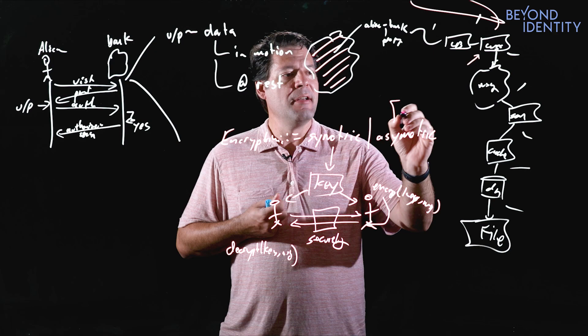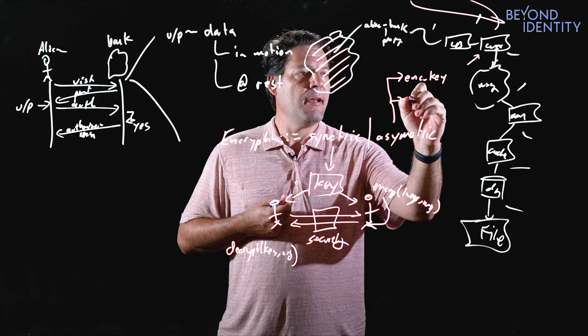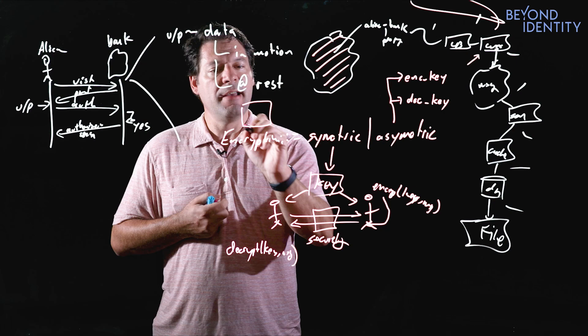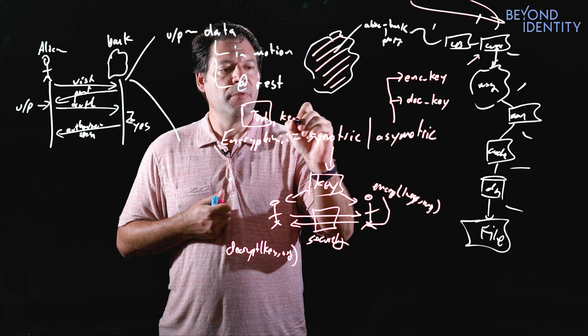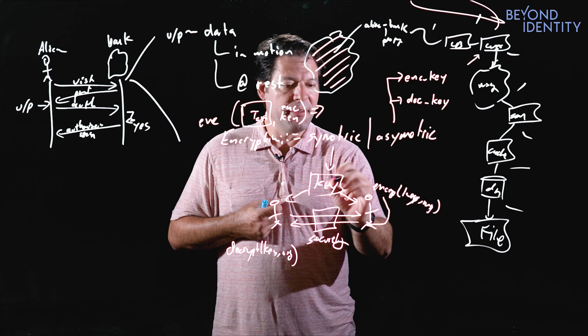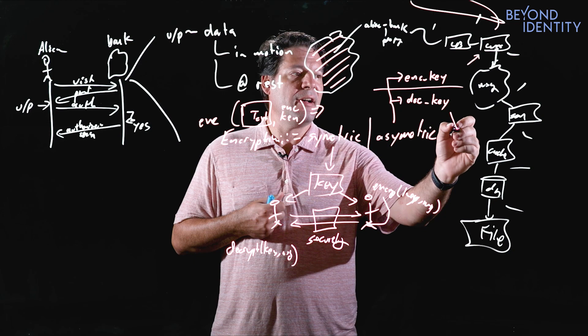In asymmetric encryption, you actually have two keys: an encryption key and a decryption key. As the name implies, they're asymmetric and go in one direction. If I have a clear text message, I can encrypt it with my encryption key and send it, and it can only be decrypted by the decryption key. Because I have two keys, from a distribution perspective, I only have to worry about distributing the decryption key.